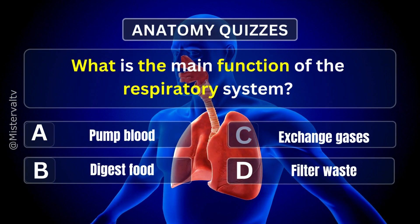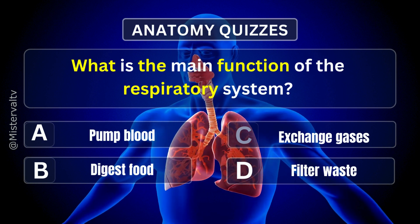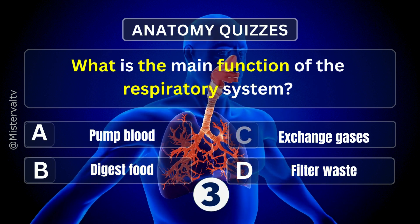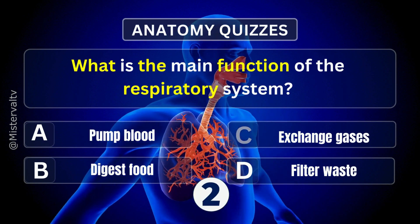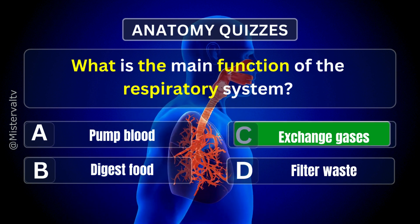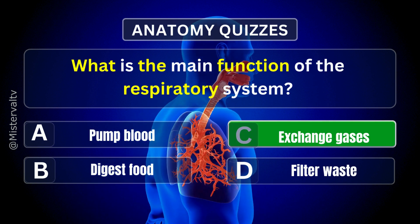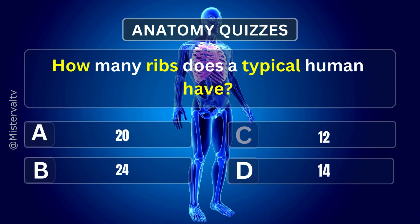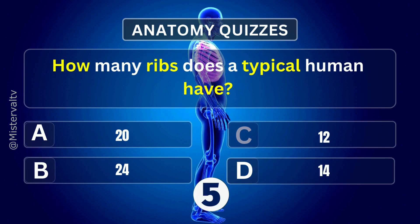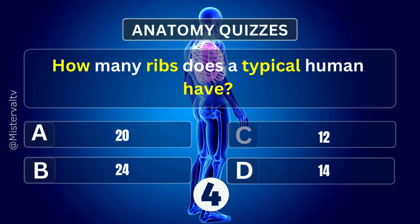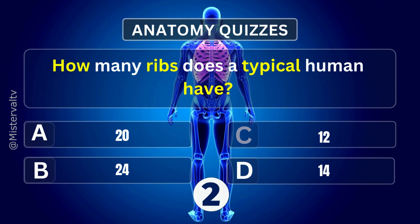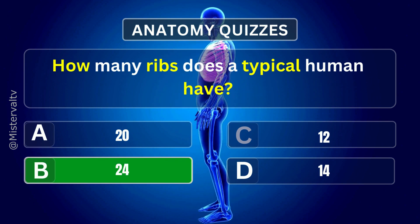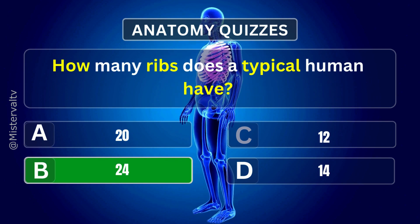What is the main function of the respiratory system? Answer. C. Exchange gases. How many ribs does a typical human have? Answer. B. 24.